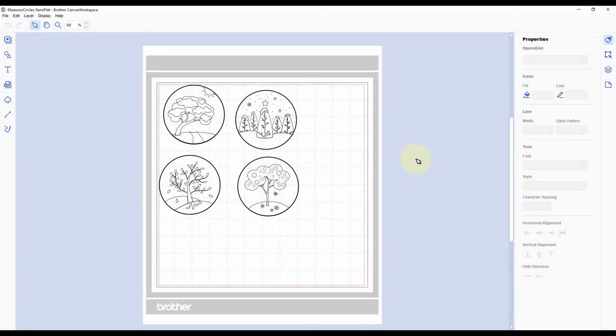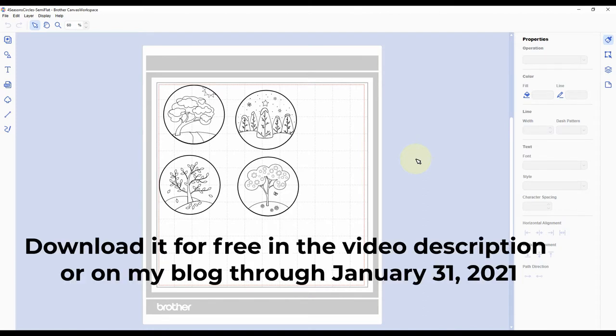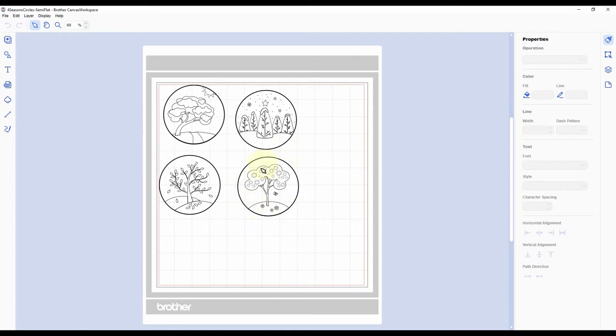I have open Brother Canvas Workspace, which is the software for the Scan and Cut. I have this file open, a format I designed called the Four Season Circles because I'm going to put these on some coasters. They are currently sized at three and a half inches because that is roughly the size of those coaster blanks.